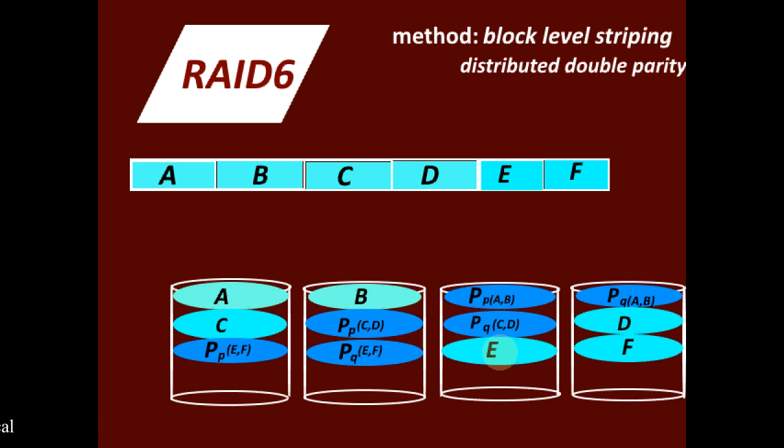And what about the write performance? Here block-level striping is used and the parity blocks are distributed among all the disks. Thus multiple writes or random writes can be handled without causing bottleneck on one or just two parity disks, similar to RAID 5, because we are using distributed parity here. Thus there is improved write performance too, but it has the overhead of writing to two parity disks at the same time, thus the write performance is a bit slower compared to RAID 5.